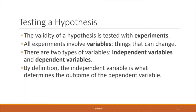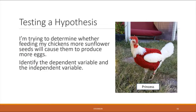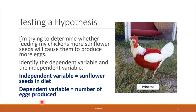Let's say I'm trying to determine whether feeding my chickens more sunflower seeds will cause them to produce more eggs. What is the dependent variable and the independent variable? There are two things that can vary: the amount of sunflower seeds in the diet, and the amount of eggs produced. The number of eggs produced depends upon the amount of sunflower seeds in the diet. Therefore, the number of eggs produced is the dependent variable and the amount of sunflower seeds in the diet is the independent variable.